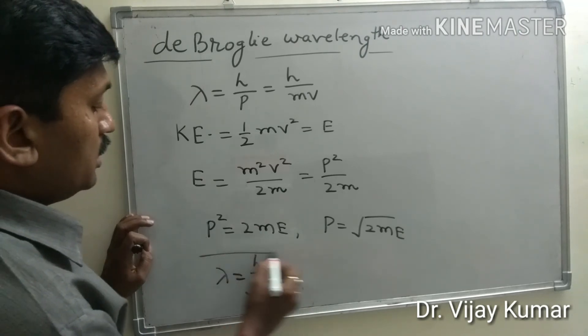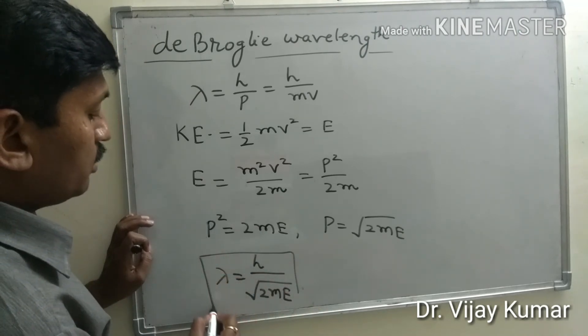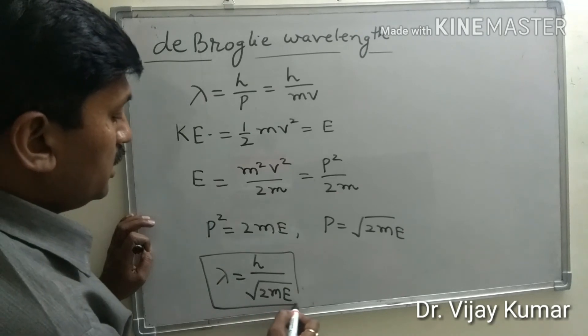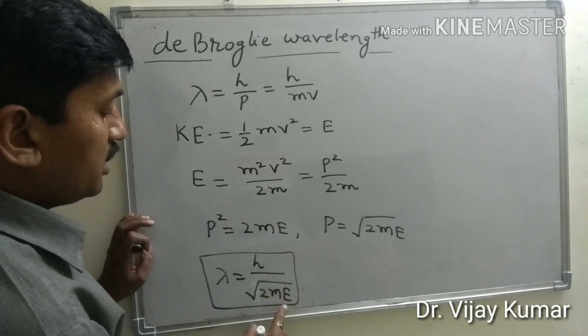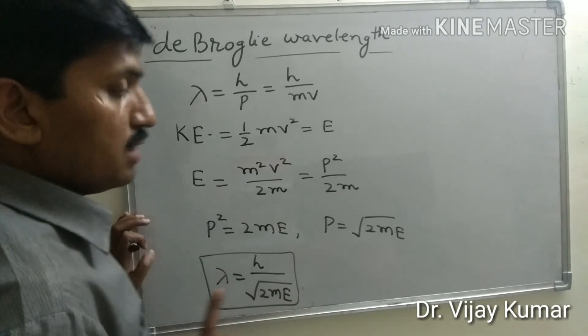This is the de Broglie wavelength of a particle having energy E.